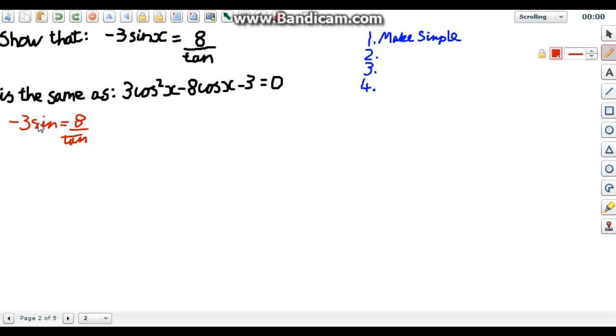We do have a fraction so I'm going to times through by tan to get rid of that fraction. So that will get us negative 3 sine tan is equal to 8. Now it is nice and simple.